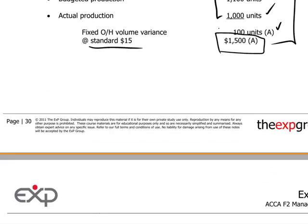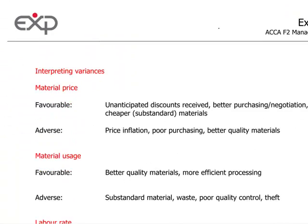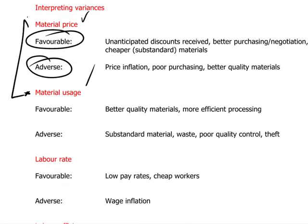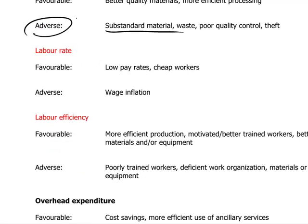Finally, the interpretation of variances is a qualitative aspect where the candidate considers what drives favorable and adverse variances. For example, using substandard materials might achieve a favorable price variance, but because the materials are substandard more must be used in production, resulting in an adverse usage variance. Calculating the variances is only the first step — analyzing and interpreting the outcome is equally important.